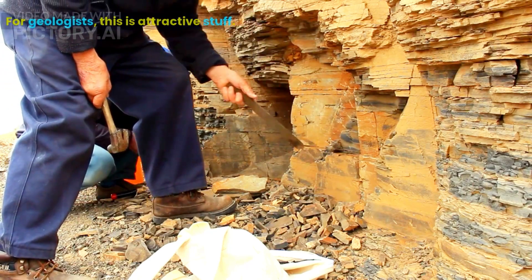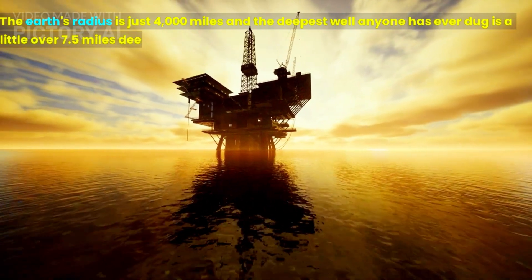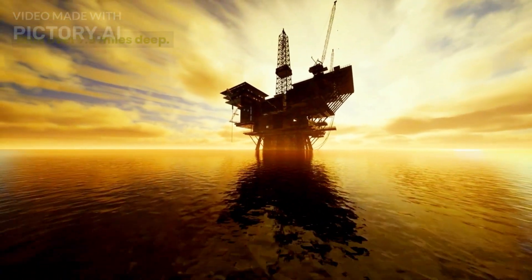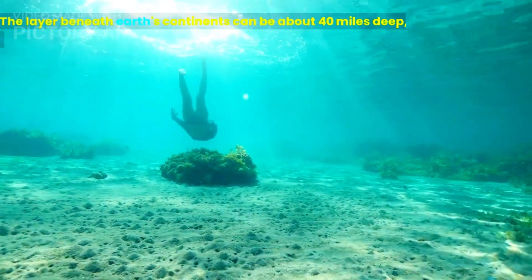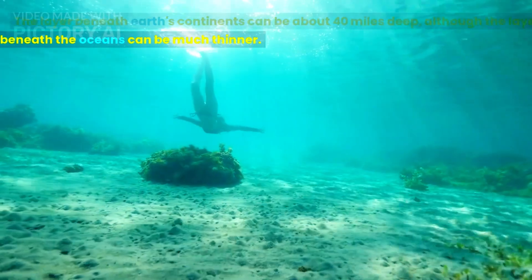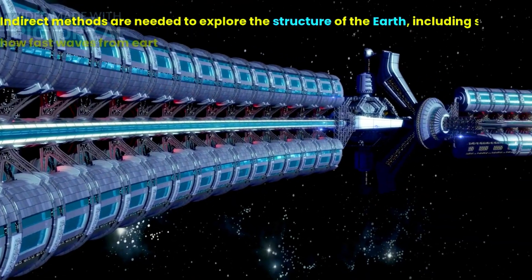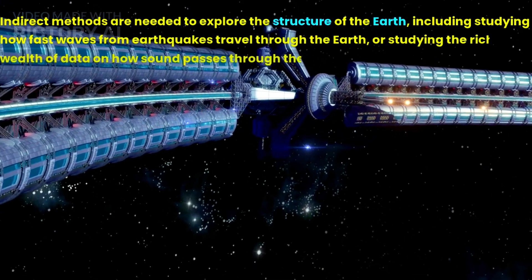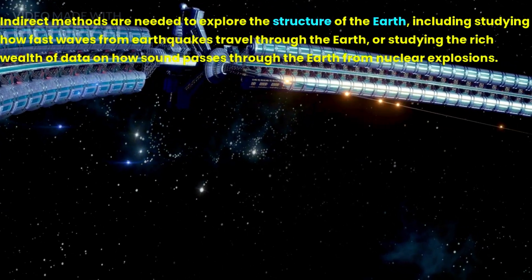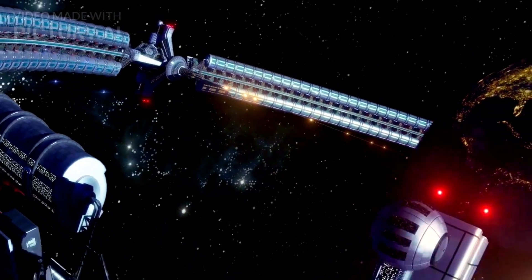For geologists, this is attractive stuff. The Earth's radius is just 4,000 miles and the deepest well anyone has ever dug is a little over 7.5 miles deep. The layer beneath Earth's continents can be about 40 miles deep, although the layer beneath the oceans can be much thinner. Indirect methods are needed to explore the structure of the Earth, including studying how fast waves from earthquakes travel through the Earth, or studying the rich wealth of data on how sound passes through the Earth from nuclear explosions.